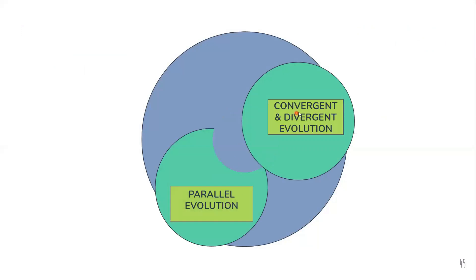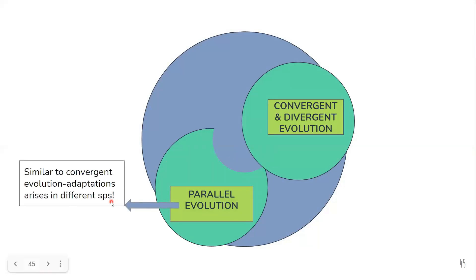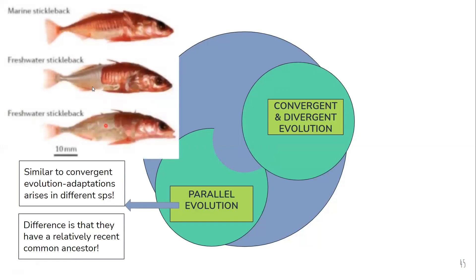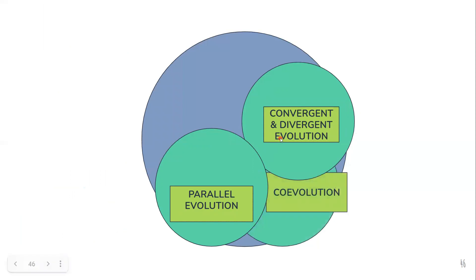Next we have parallel evolution. It is very similar to convergent evolution in that it occurs in different species, however they have a relatively recent common ancestor. The example is the stickleback — two species that developed independently of each other yet have similar biological traits, namely spines. This is an example of parallel evolution where adaptations arise in different species that share a relatively recent common ancestor.